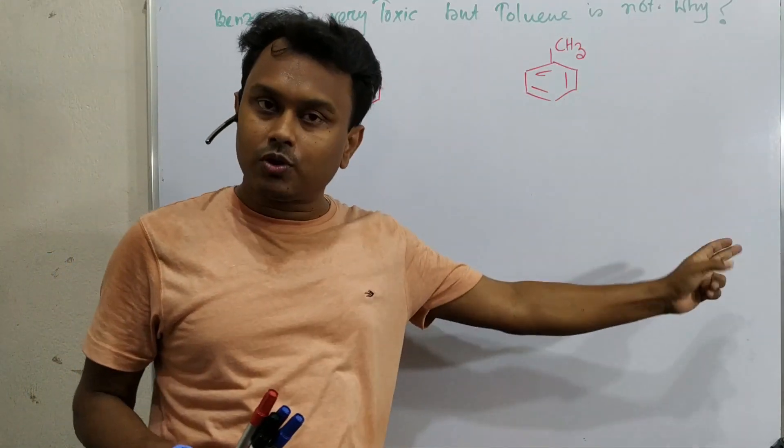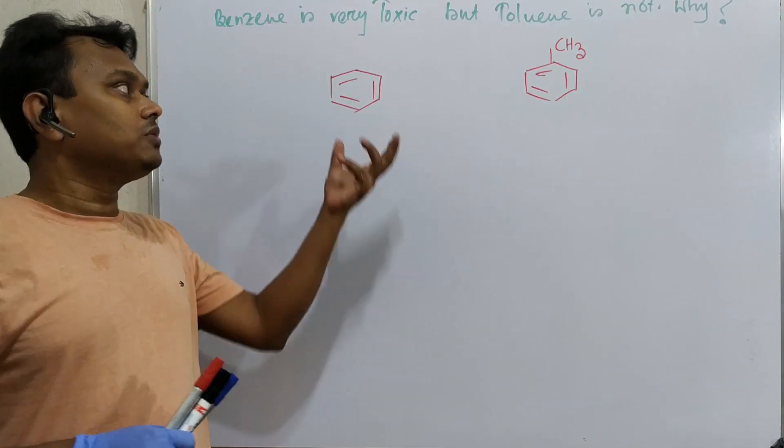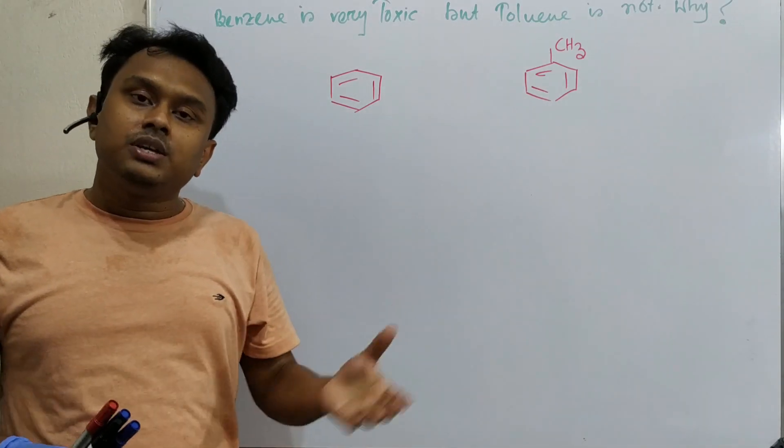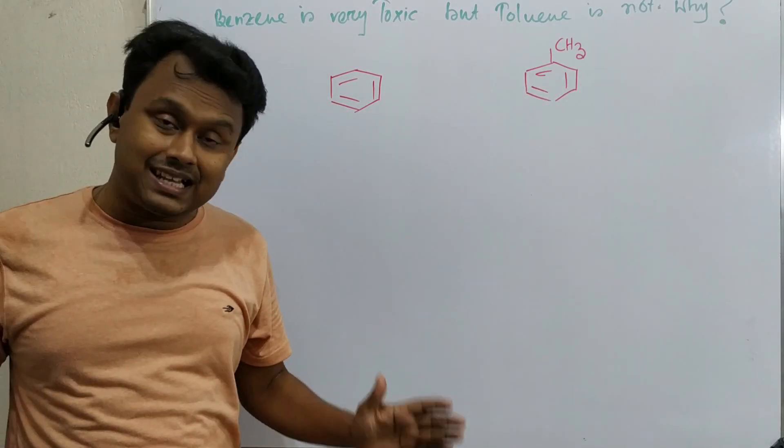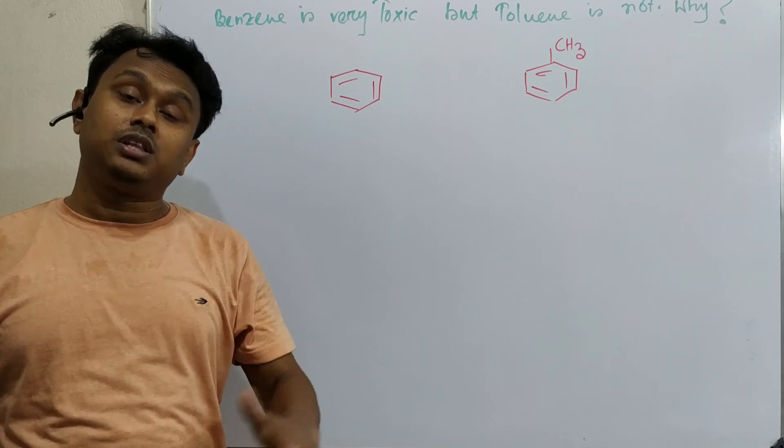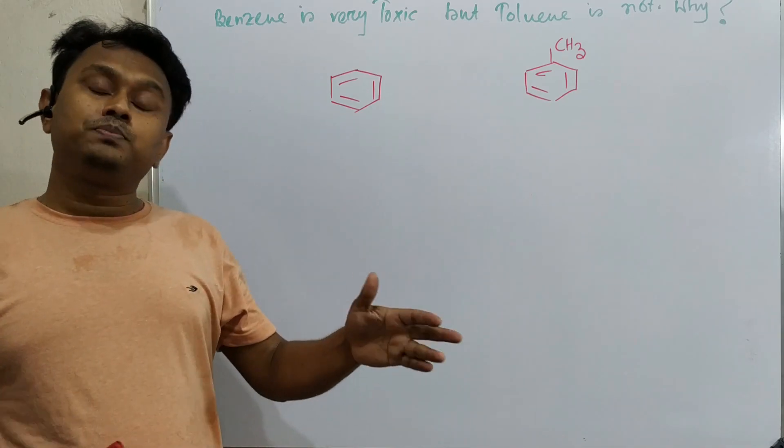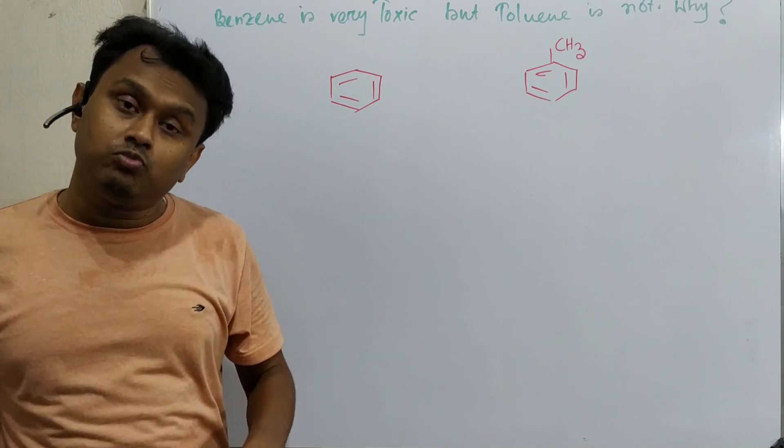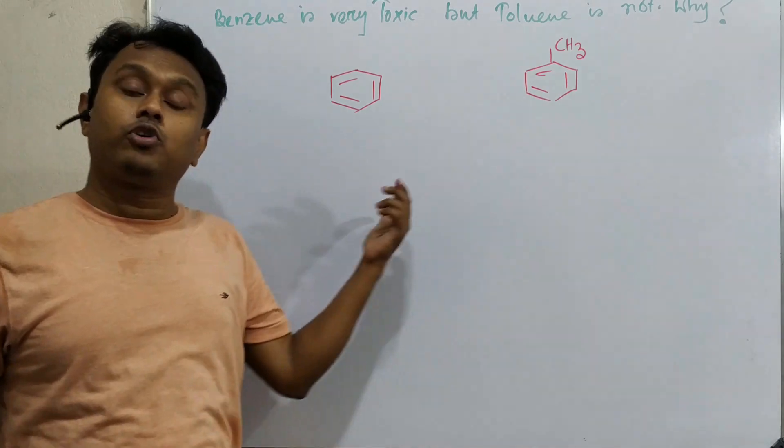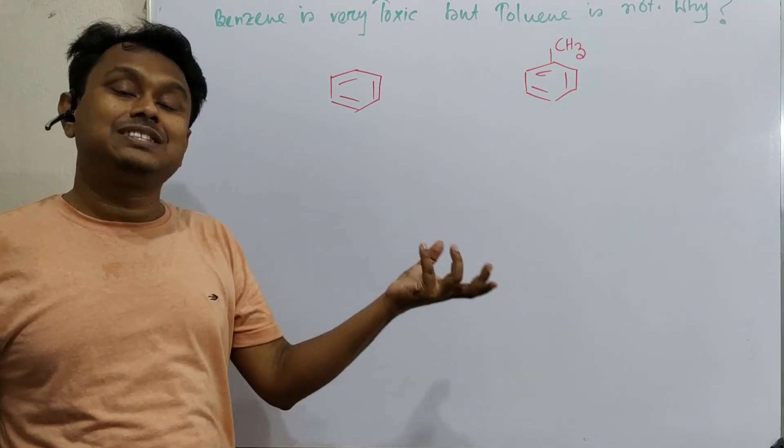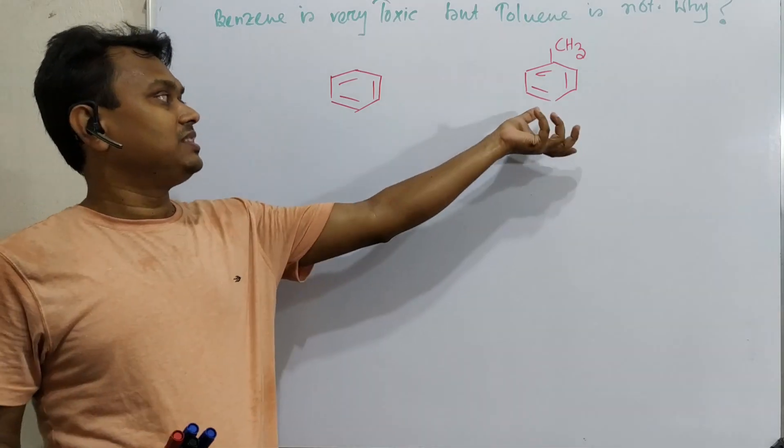A simple question: benzene is very toxic but toluene is not. Why? The background of this question is that in the laboratory, people say don't use benzene as a solvent. Try to avoid the use of benzene. If you want to produce azeotrope and remove water, use toluene azeotrope not benzene azeotrope. Azeotrope means constant boiling mixture between water and the solvent.